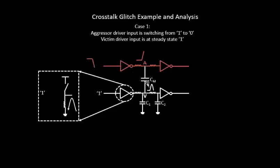You see the other capacitance — you see this particular leaky bucket — and basically all the charges from this particular inverter flow through this leaky bucket into these two capacitors, and these two capacitors try to get charged.